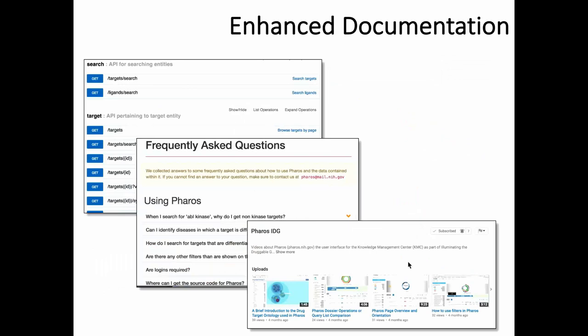One of the key requirements for a system like this is documentation. If you're a programmer interested in the API, it is documented using Swagger. We have started collecting frequently asked questions that go up on the website, and thanks to our colleagues at New Mexico, there are short videos describing how to use different aspects of the platform. This is an ongoing effort, and if you use Pharos and have complaints, suggestions, or questions, please get in touch — those can be used to enhance documentation going forward.